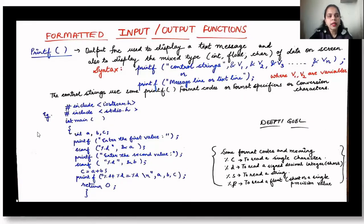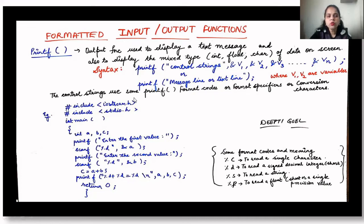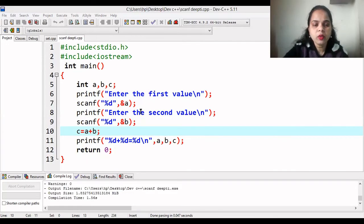Now let us see the formatted output function printf. Printf is the output function used to display a text message and to display mixed type variables — integer, float, character — at the output. The syntax is: printf("control strings", v1, v2, v3, ...) where v1, v2, v3 are the variables to be printed. If it is a plain message or text line, no control strings are needed — simply write printf("message line") in quotation marks.